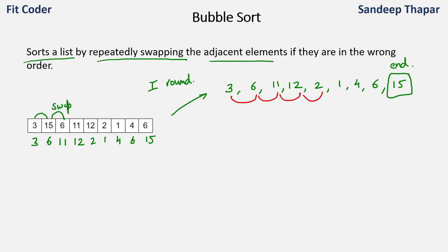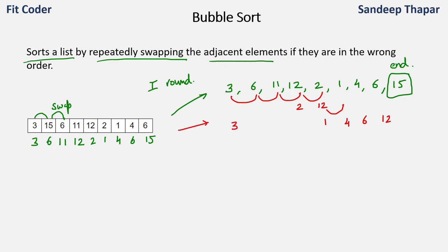Then we compare 12 and 2. These will be swapped, so 2 will come here and 12 will come instead of 2. Then we'll compare 12 and 1 — these will again be swapped because 1 is smaller, so 1 and 12 will be swapped. Then we compare 12 and 4 — so 4 will come here and 12 will come instead of 4. Then we compare 12 and 6 — again 6 will come before 12 and 12 will come in place of 6. So after the second round the values in the array are 3, 6, 11, 2, 1, 4, 6, 12, 15.